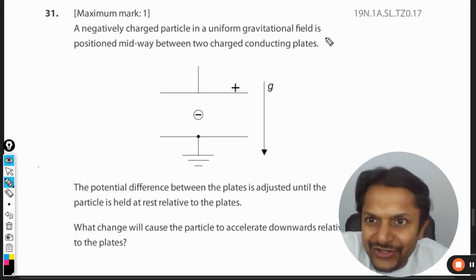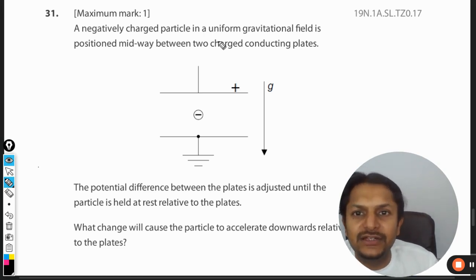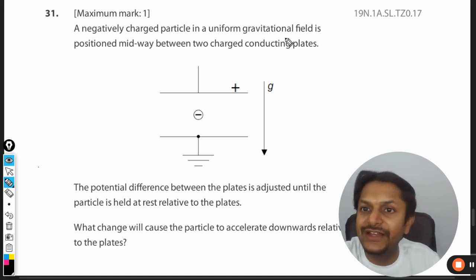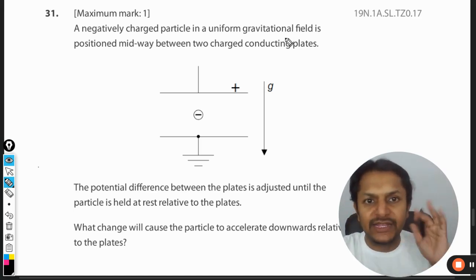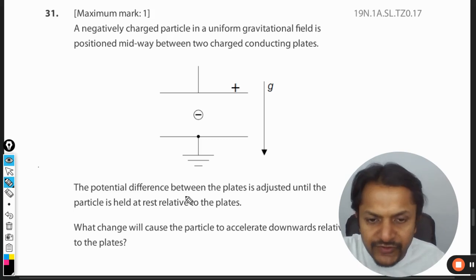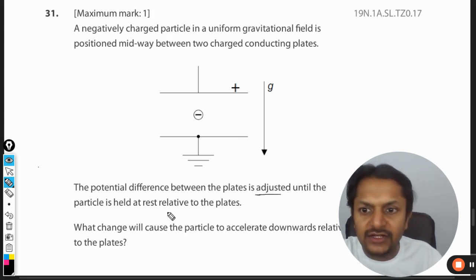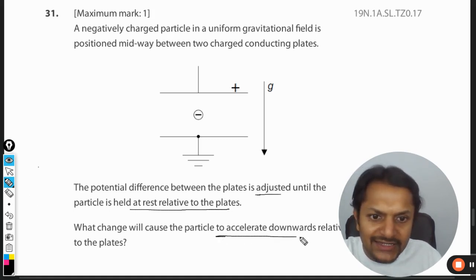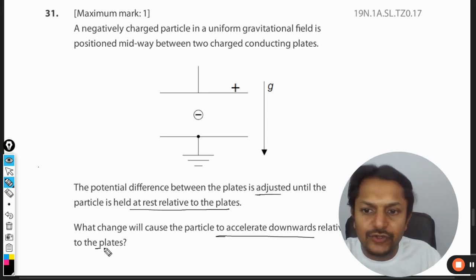Okay dear students, let's see what is in this question. A negatively charged particle in a uniform gravitational field is positioned midway between two charged conducting plates. The potential difference between the plates is adjusted until the particle is held at rest relative to the plates. What change will cause the particle to accelerate downwards relative to the plates?